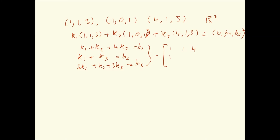The question is: if this matrix gives us a solution, we will have values of the k's for any B1, B2, B3, which means we say that these three vectors span R3. Very simply, if the determinant of matrix A is non-zero, then A inverse exists, and therefore we can find a unique set of values of k1, k2, k3 satisfying this relationship. Therefore any arbitrary vector B1, B2, B3 in R3 can be expressed as a linear combination, meaning these three vectors span R3.